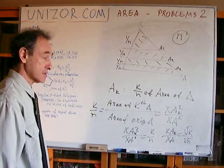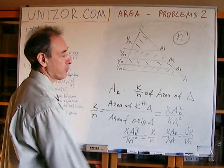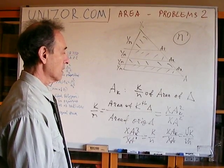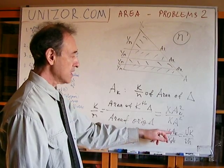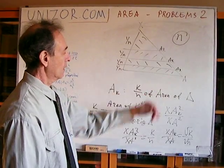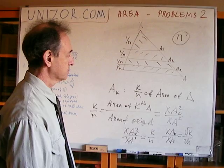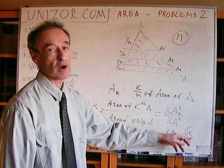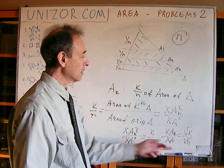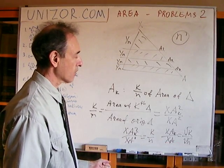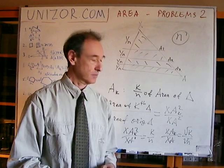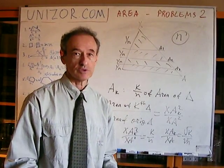We know how to construct square root of k and square root of n, so this is just the fourth proportional. For each k from 1 to n minus 1, construct square root of k, then square root of n, and find the fourth proportional satisfying this proportionality — which we know how to do from similarity of triangles.